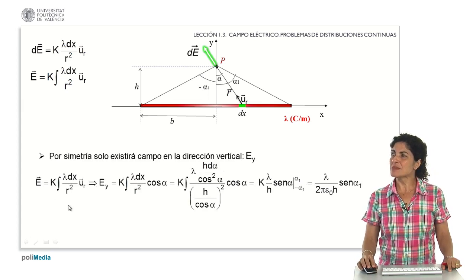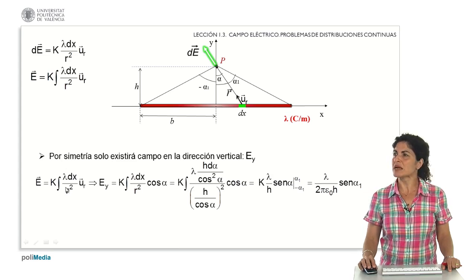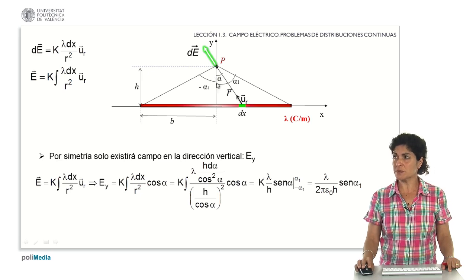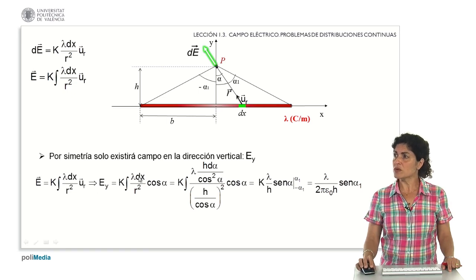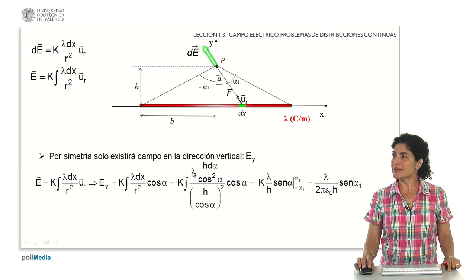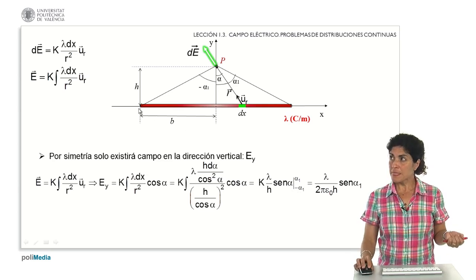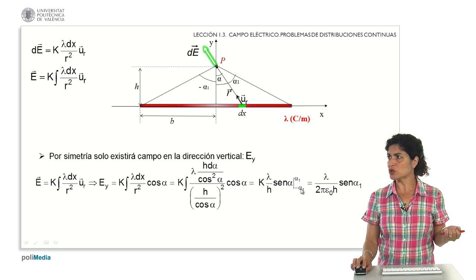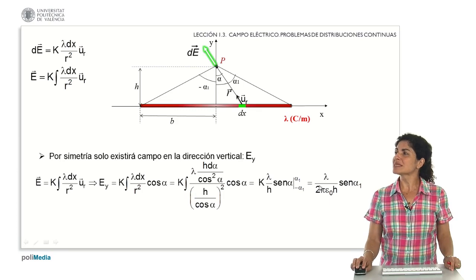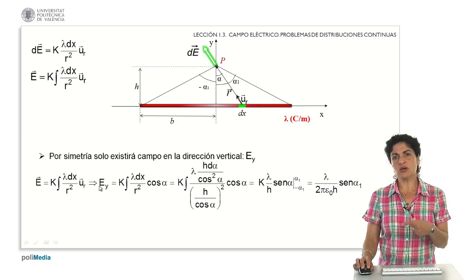Applying these conditions to the integral — projecting onto the vertical axis via cosine of alpha, expressing the length differential as dx, and rewriting the squared distance as a function of the angle and height h — all parameters become functions of the integration variable, which changes from x to alpha. Solving the integral between limits corresponding to the total wire length from minus b to b, equivalently from minus alpha_1 to alpha_1, gives the vertical field component. The horizontal component is null.